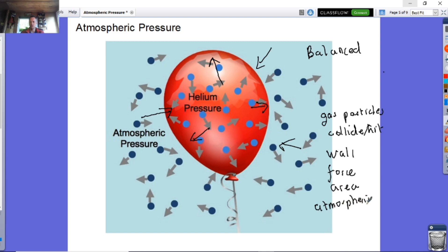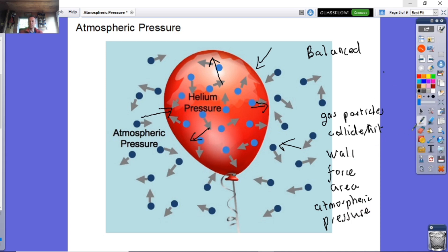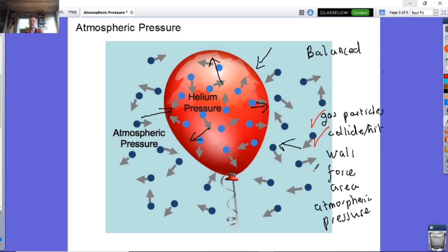And you've got to be able to use key words in exam questions to make sure you answer the question correctly. So it's getting these key words in. In other words, you've got to get in that gas particles collide, hit the wall, create a force over an area, and that's going to create atmospheric pressure.